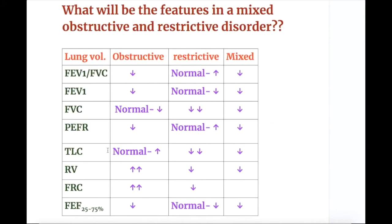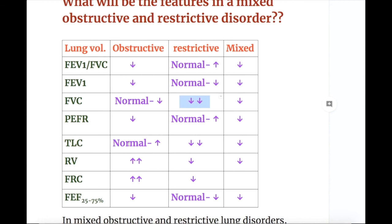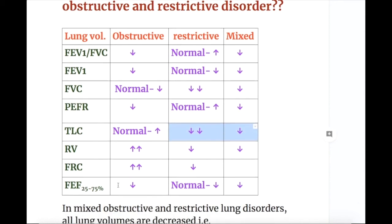In a mixed obstructive and restrictive disorder, all volumes are decreased. In obstructive disorders, the FEV1/FVC ratio is reduced, FEV1 is reduced, TLC is normal to increased, and FVC is normal to decreased. In restrictive disorders, the FEV1/FVC ratio may be normal to increased, FEV1 is normal to decreased, but FVC is markedly decreased. TLC is increased in obstructive disorders but decreased in both mixed and restrictive disorders.